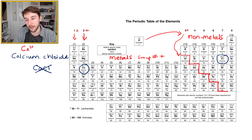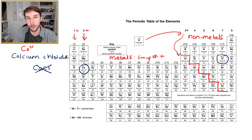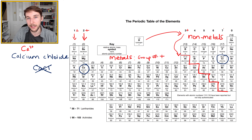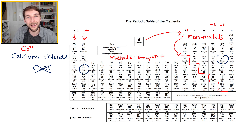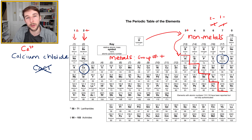Chlorine is a non-metal. Metals lose electrons and become positive ions; non-metals gain electrons and become negative ions. The number of electrons gained relates to the group number because they need a full outer shell. Chlorine is in group 7, so it needs to gain 1 electron to get a full outer shell of 8, making it a 1− ion. Group 6 elements need to gain 2 electrons, making them 2−.